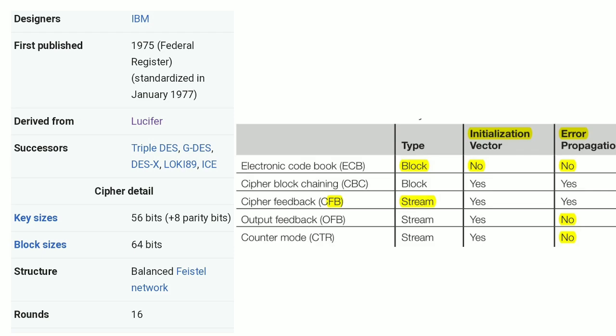There are five modes of operation of the Data Encryption Standard: Electronic Code Book (ECB), Cipher Block Chaining (CBC), Cipher Feedback Mode (CFB), Output Feedback Mode (OFB), and Counter Mode. There are three parameters which differentiate between these five modes of operation.